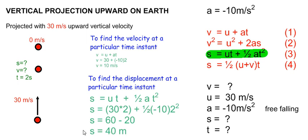That means that when the ball is projected at 30 meters per second, after 2 seconds, it will be 40 meters upwards, and its velocity will be 10 meters per second at that point.